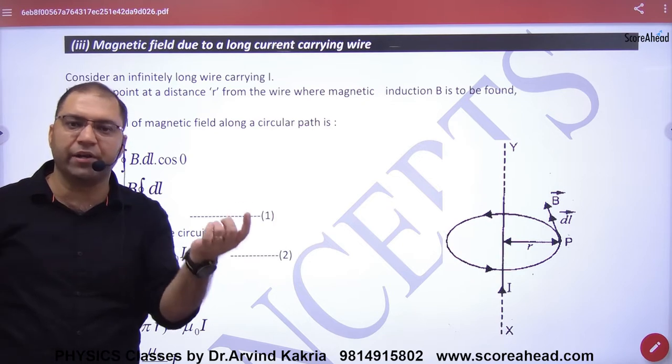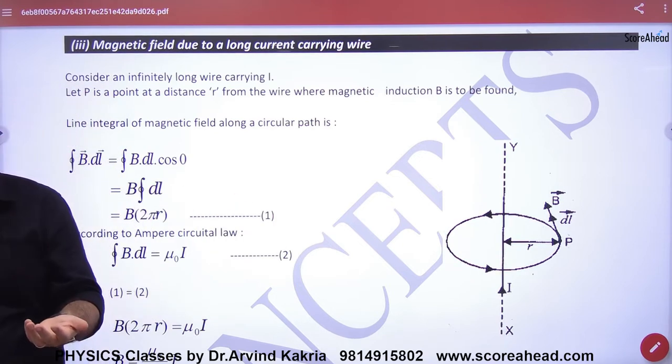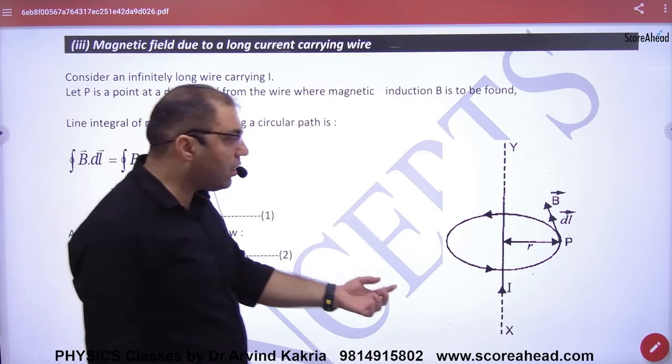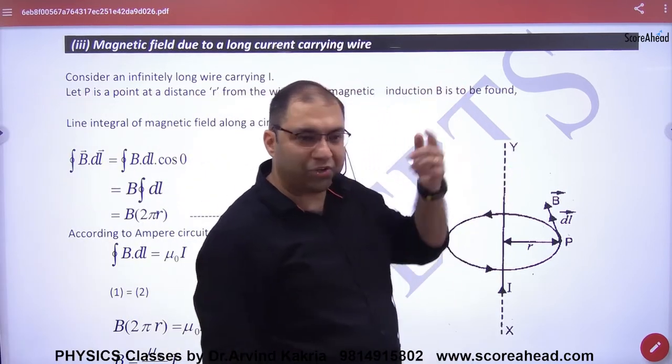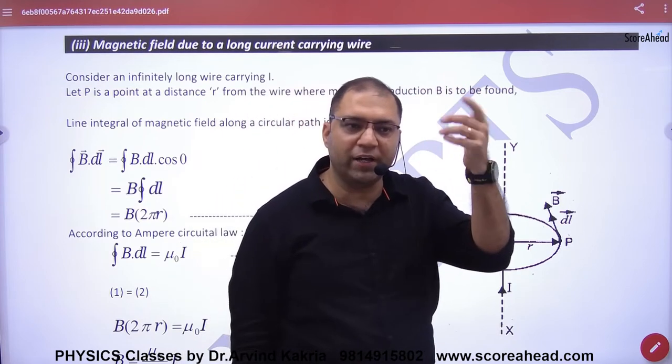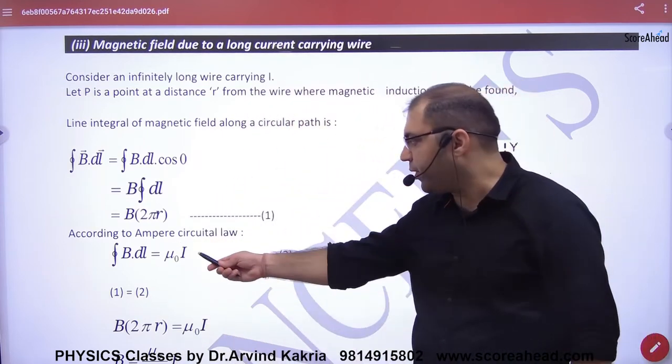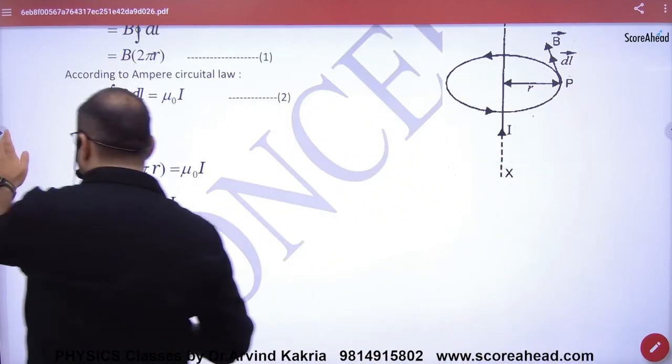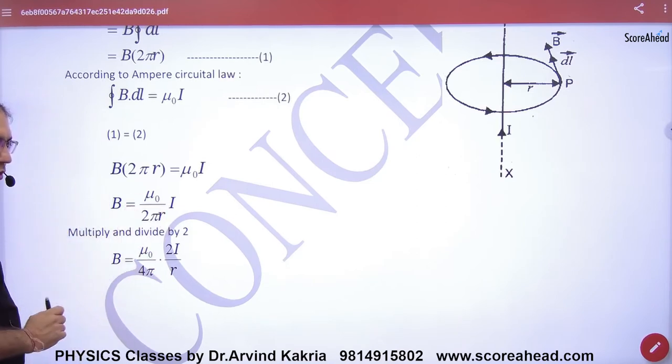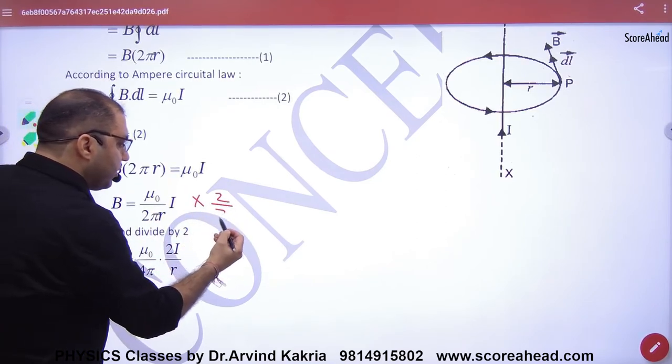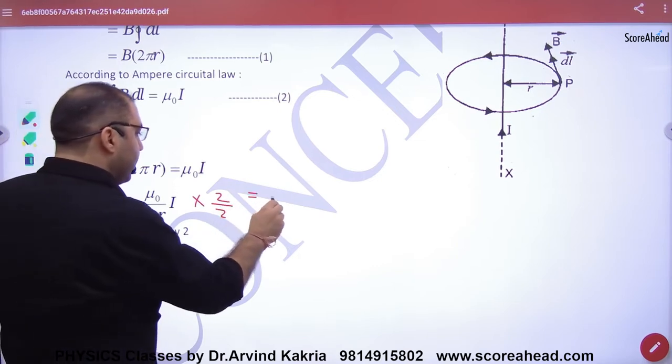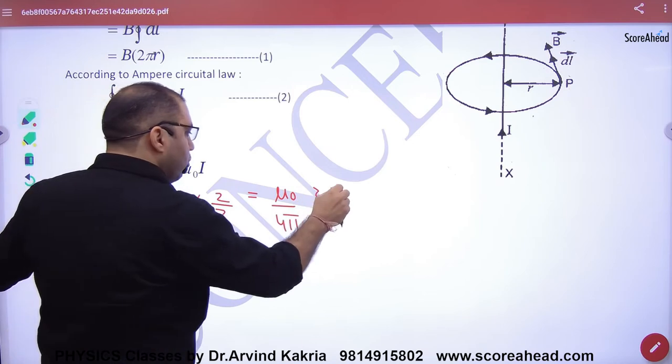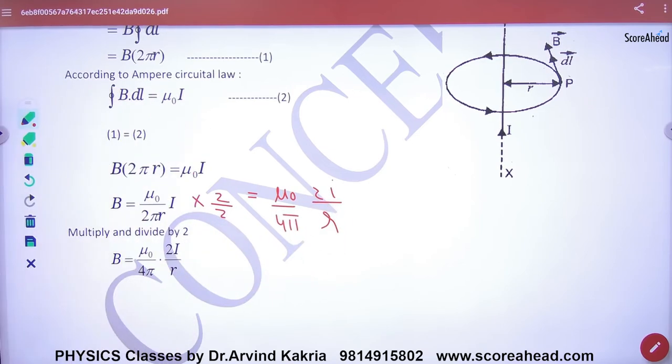Integration of B·dl is B × 2πr. According to Ampere's Circuital Law, ∫B·dl = μ₀I. So B × 2πr = μ₀I, which gives B = μ₀I/2πr. And the answer is the same. So what did I say?